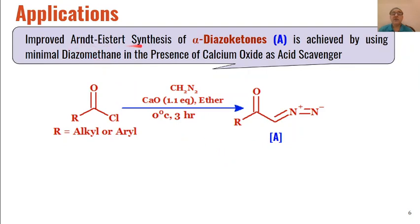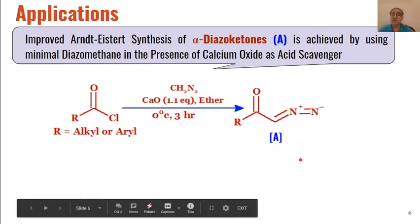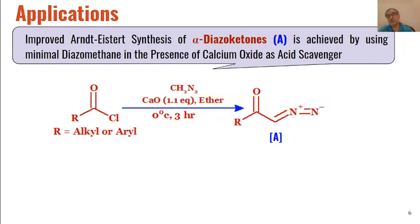An improvement in the synthesis of alpha-diazoketones can be achieved using minimum quantities of diazomethane when calcium oxide is used as an acid quench. In the presence of calcium oxide, diazomethane will react with the substrate to give alpha-diazoketones as product. These alpha-diazoketones in presence of silver ions can undergo Wolff rearrangement to give ketenes, and those ketenes can be hydrolyzed to give carboxylic acids.